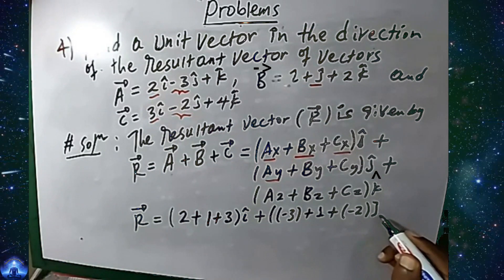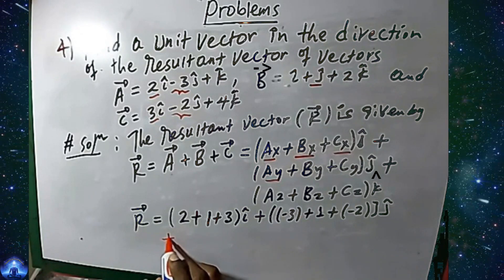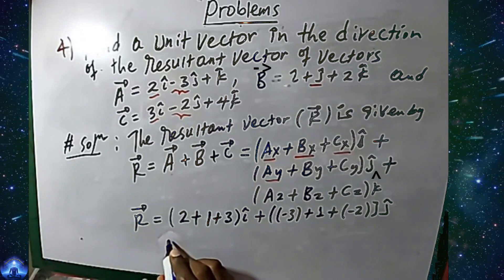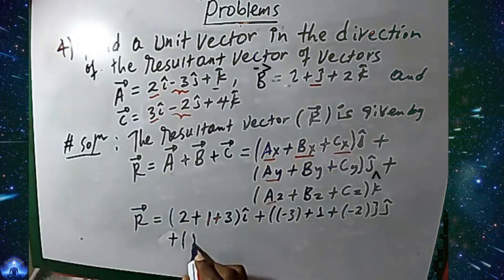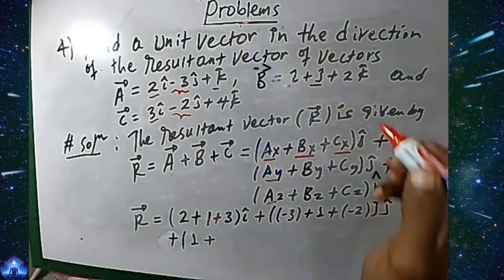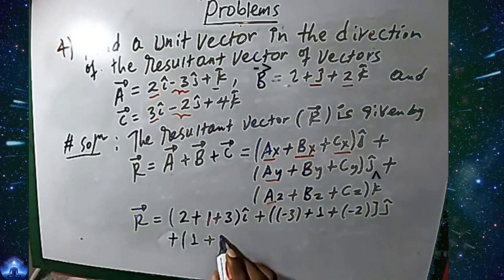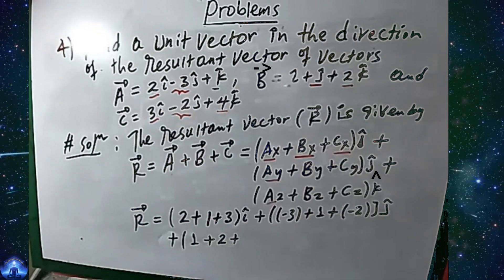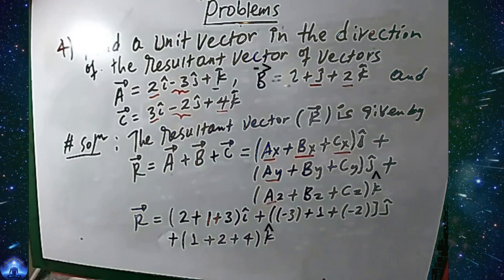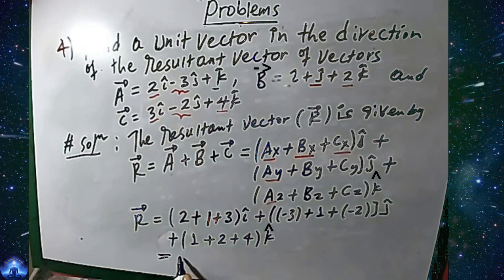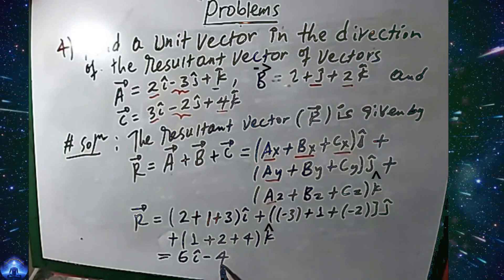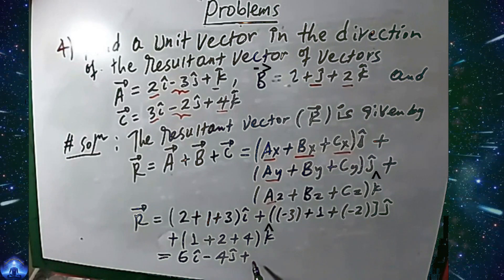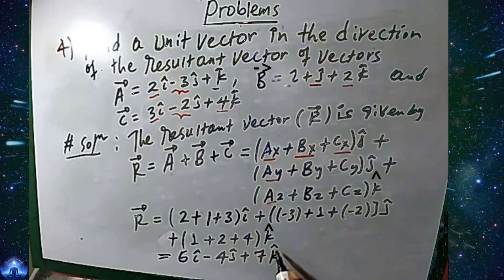Plus, in the z direction, az is 1, bz is 2, cz is 4, in the k direction. Adding the like terms, we get r equals 6 in the i direction, minus 4 in the j direction, plus 7 in the k direction.